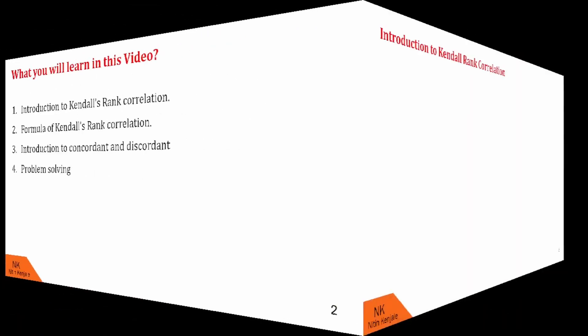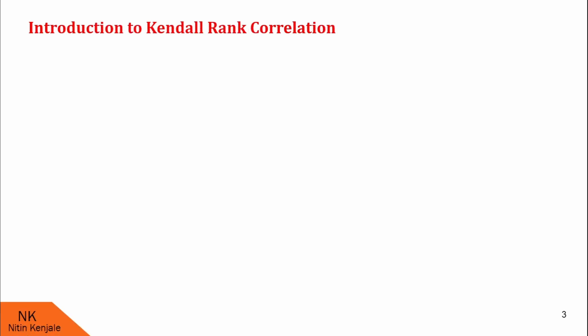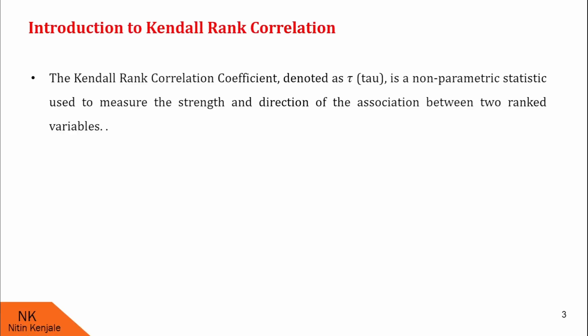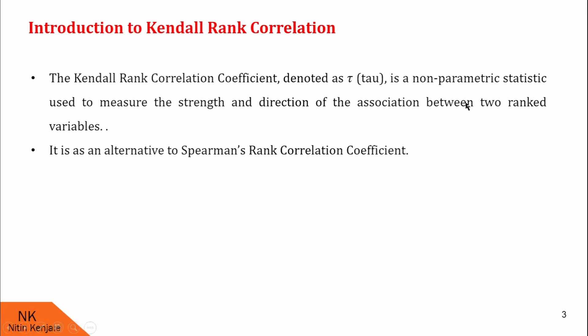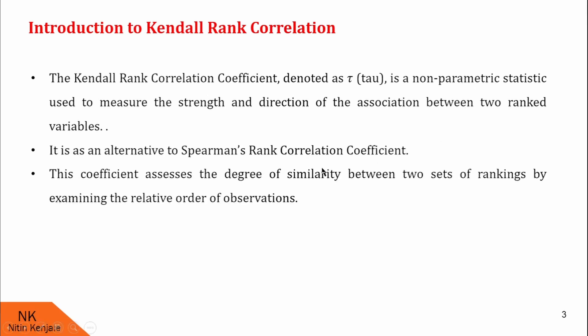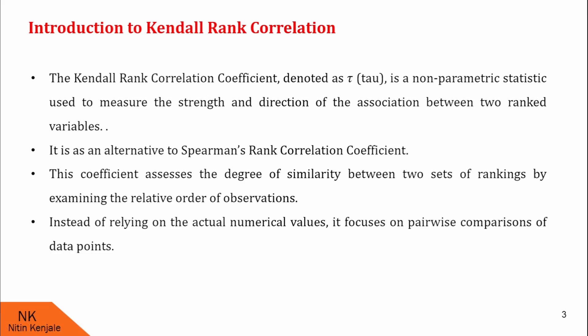Now let us proceed for the introduction of Kendall's rank correlation coefficient. The Kendall rank correlation coefficient, usually denoted by tau, is a non-parametric statistic used to measure the strength and direction of association between two ranked variables. It is an alternative to Spearman's rank correlation coefficient. This coefficient assesses the degree of similarity between two sets of rankings by examining the relative order of observations. Instead of relying on the actual numerical values, it focuses on pairwise comparisons of the data points.